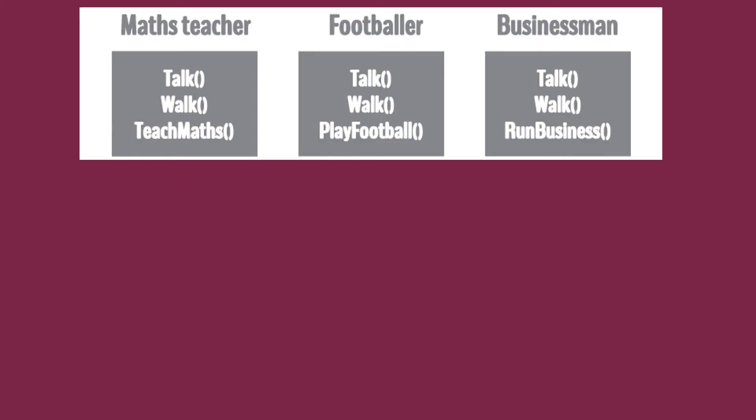Let's take an example. Suppose we have three characters: a math teacher, a footballer and a businessman. As a person or human, they all inherit some common properties like walking and talking. However, they all have some special skills. A maths teacher can teach maths, a footballer can play football and a businessman can run a business.